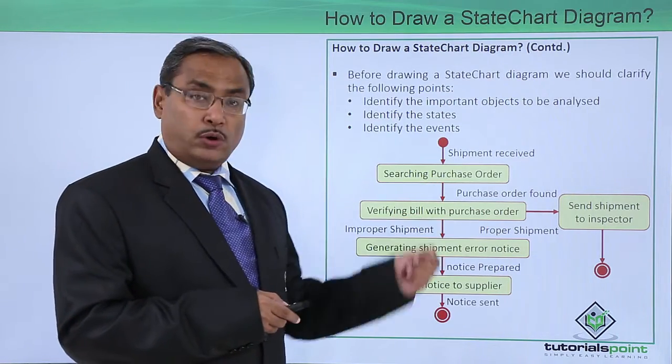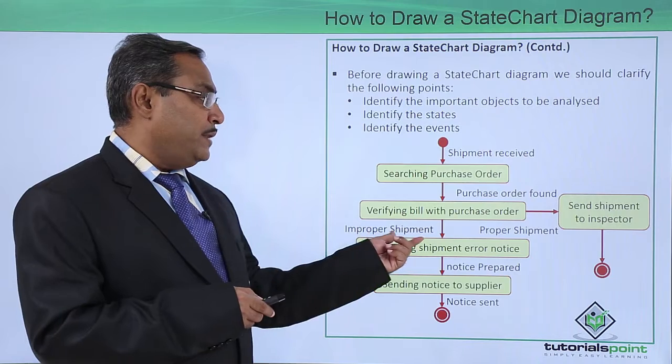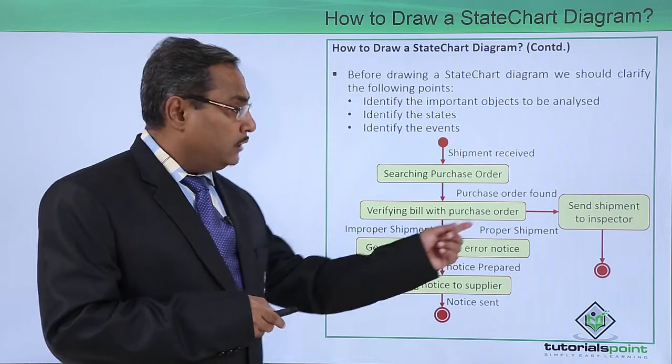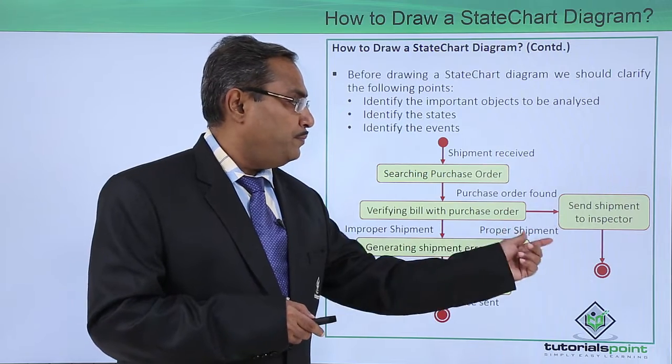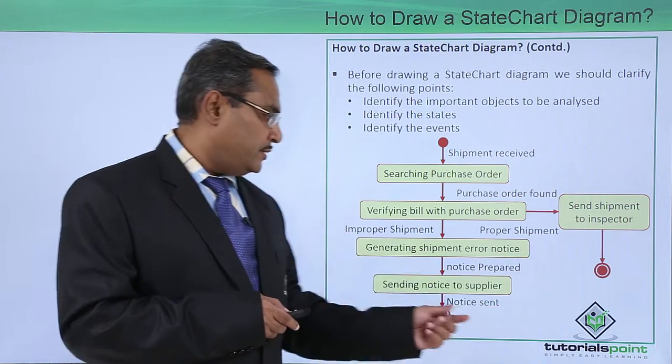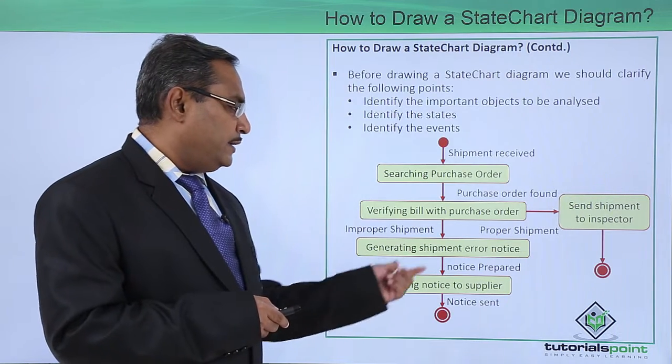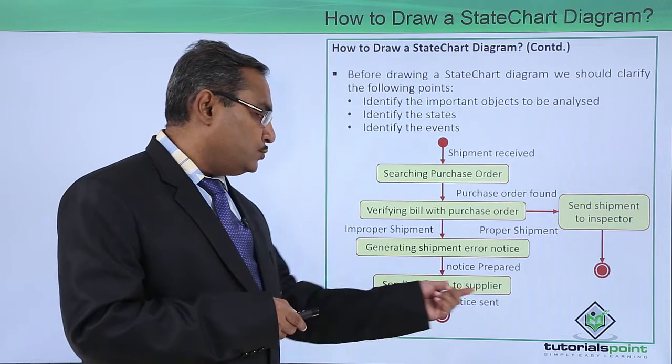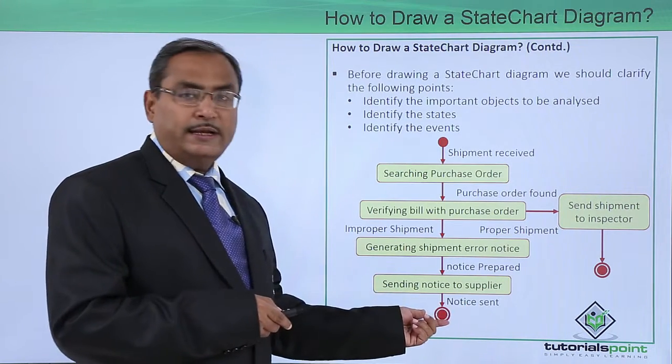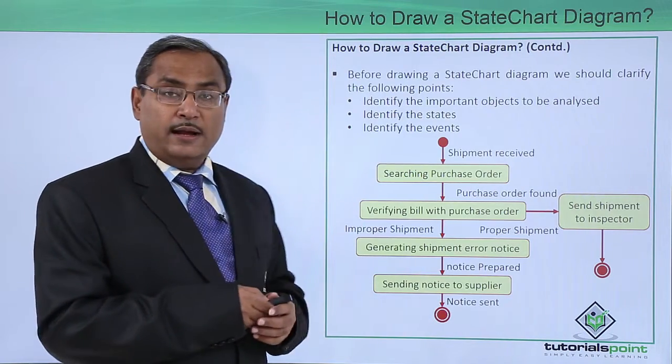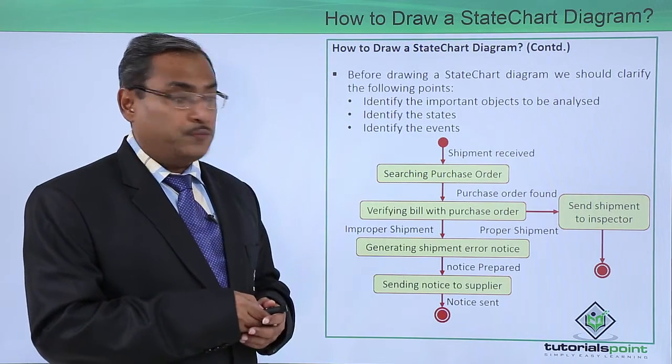Verify bill with the purchase order. An improper shipment is observed. In that case, it will be coming to this flow, otherwise it will go to this proper shipment. So send shipment to inspector and finishing state. Otherwise, generating shipment error notice. Notice will be prepared and then sending notice to the supplier and notice will be sent and that is the terminating state here. That is the State Chart Diagram for this shipment process.